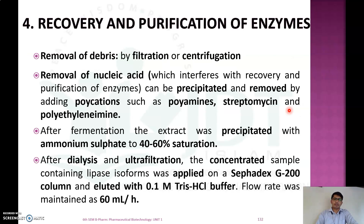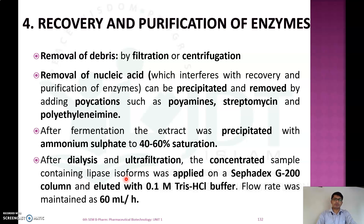After fermentation, we must recover and purify the lipase enzyme. This is done by cell lysis, followed by removal of debris by filtration and centrifugation, and removal of nucleic acids by precipitation using polycations like polyamine, streptomycin, and polyethylenimine. The sample is then precipitated with ammonium sulfate at 40–60% saturation. After dialysis and ultrafiltration, the concentrated sample containing lipase isoforms is applied to a Sephadex G-200 column and eluted with 0.1 M Tris-HCl buffer at a flow rate of 60 mL/hour.